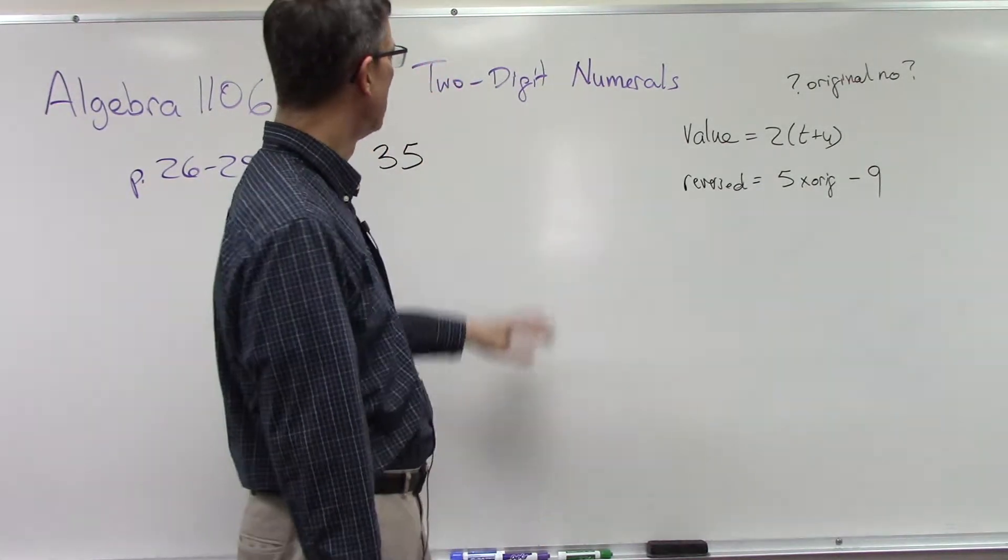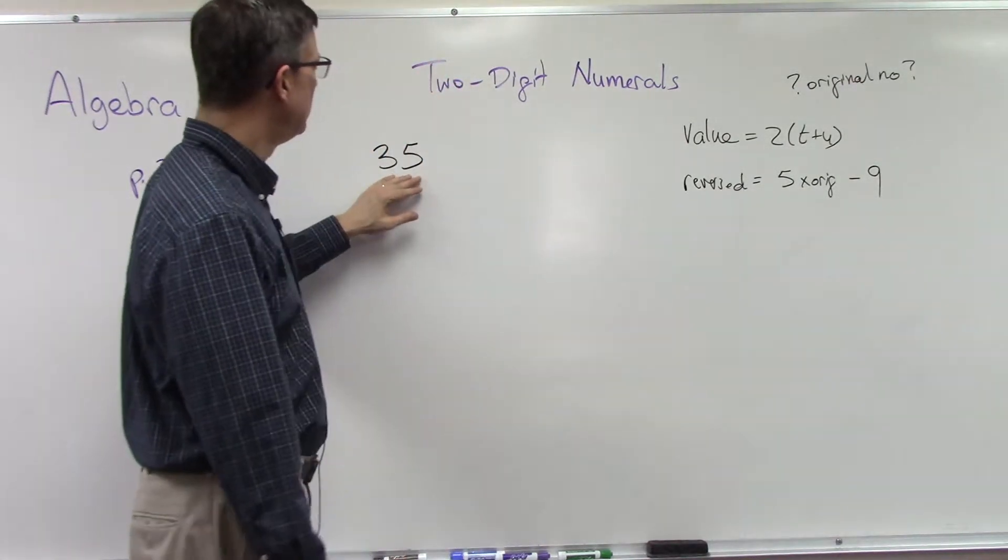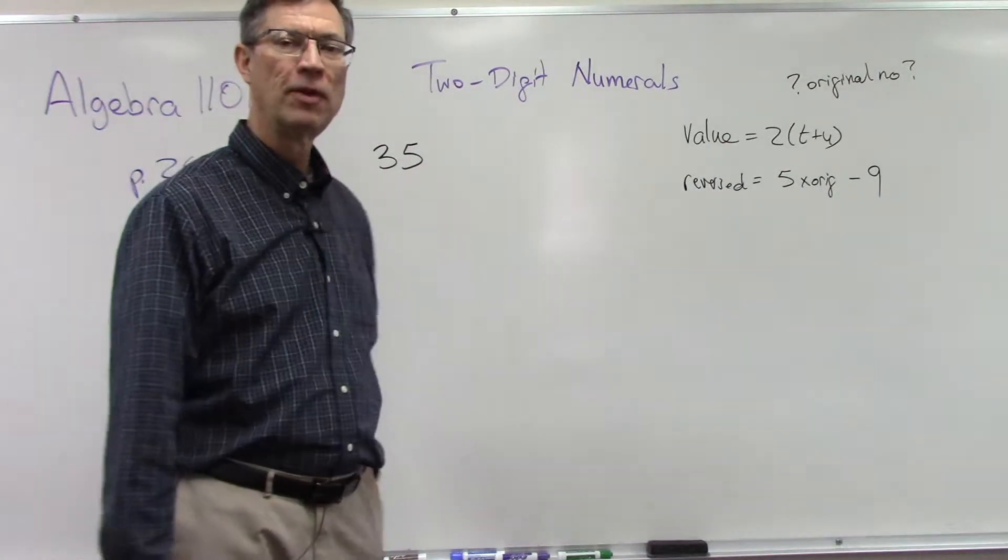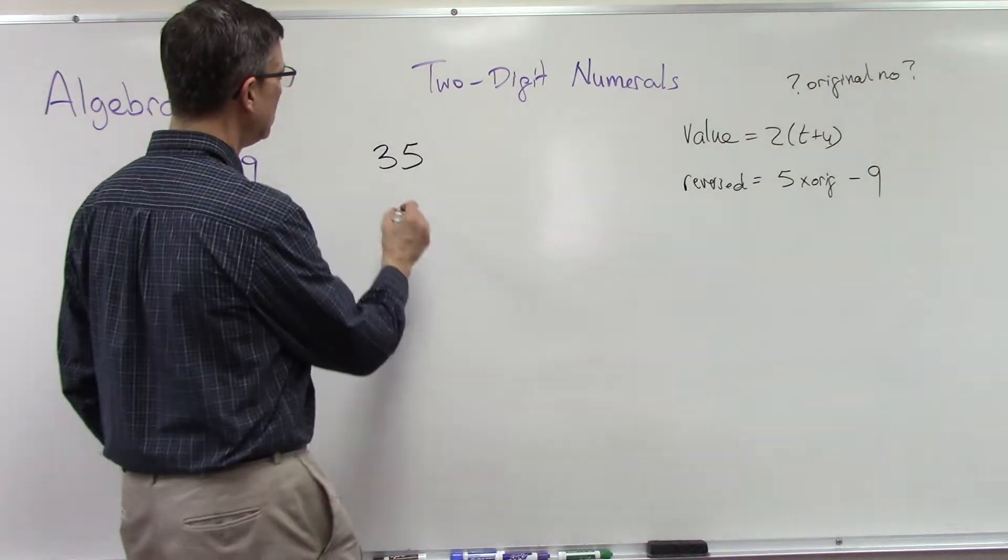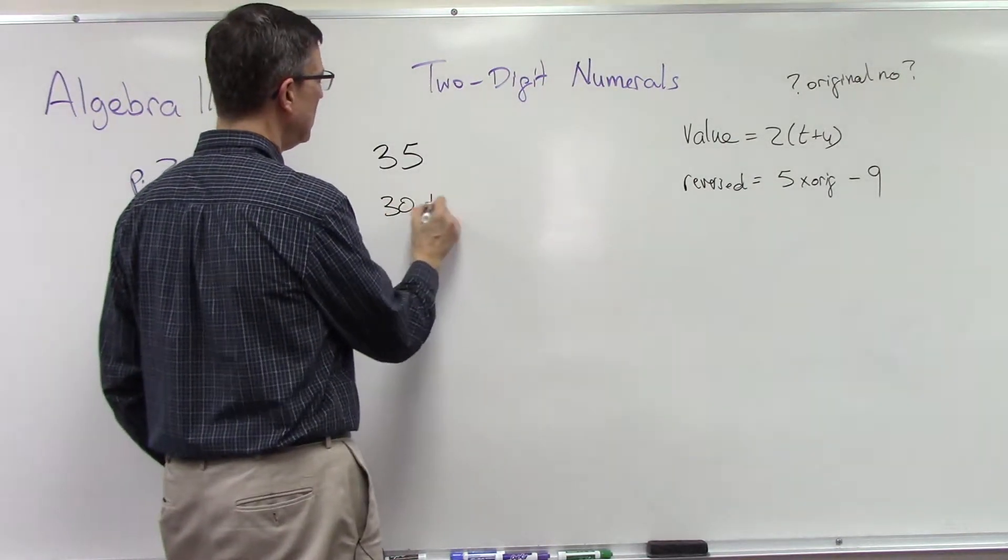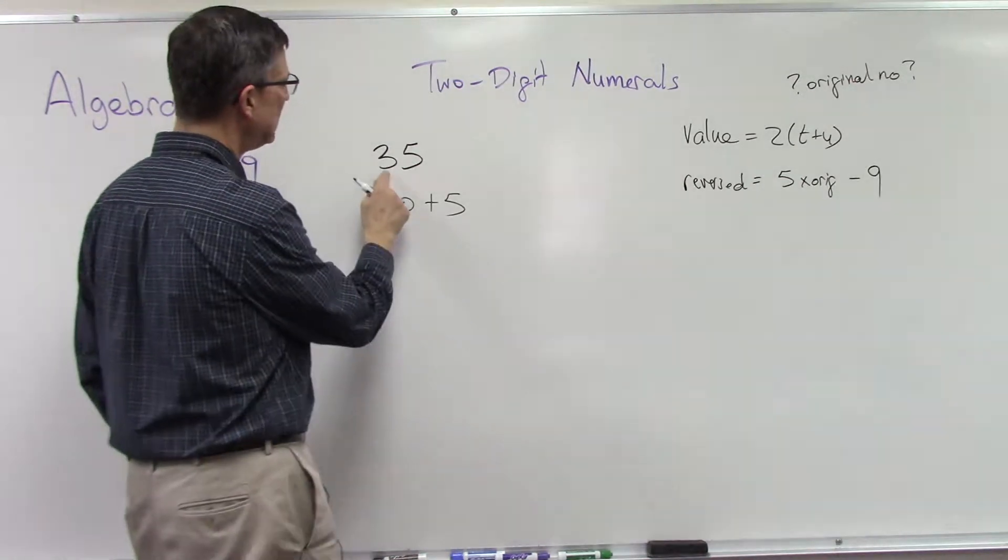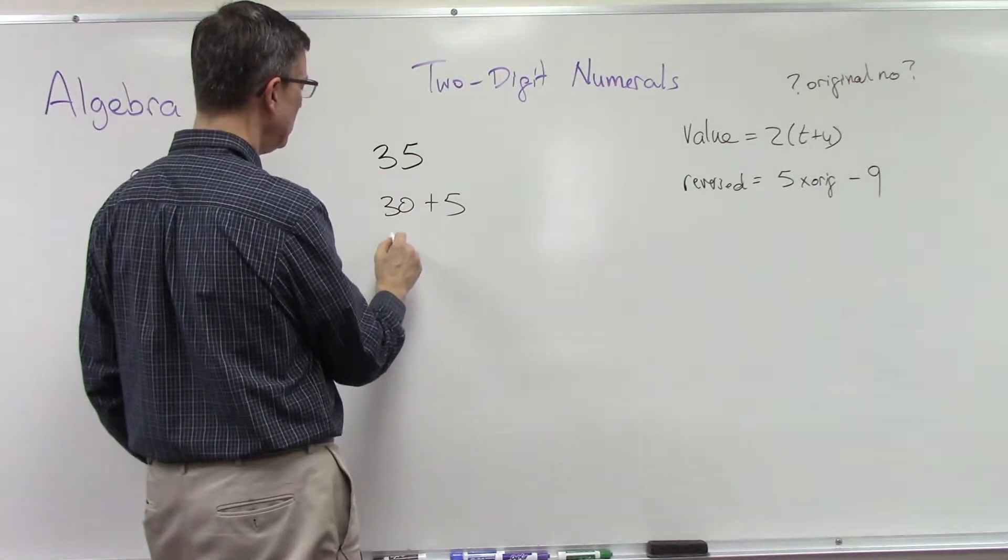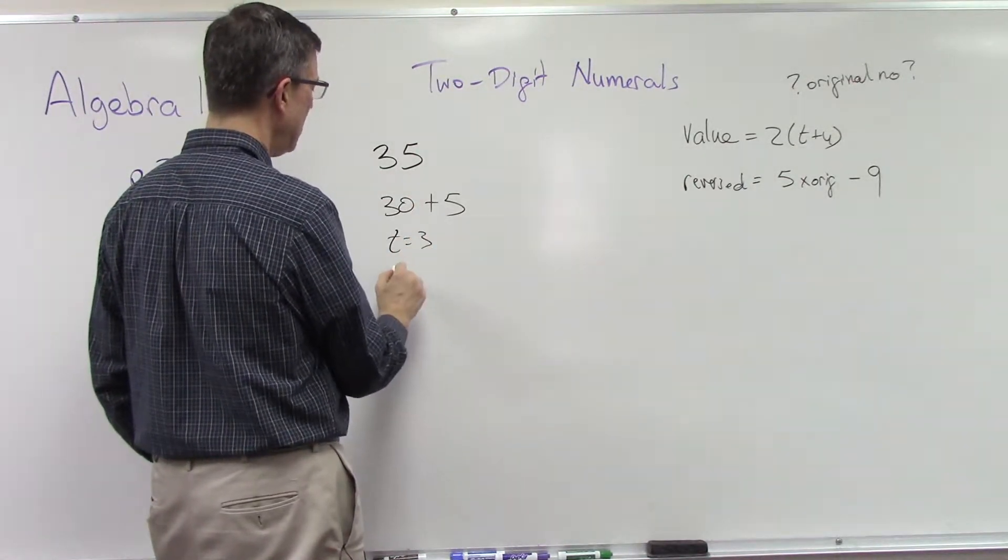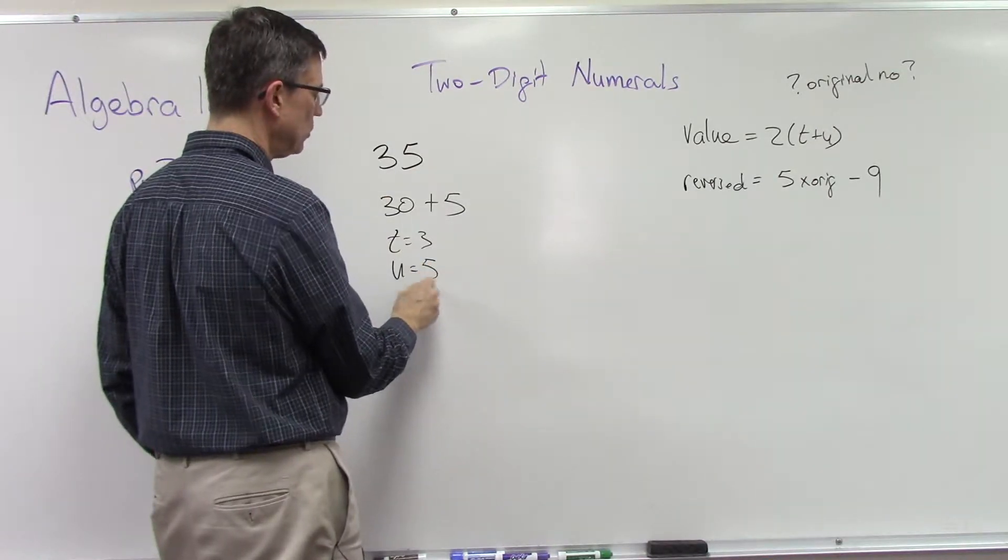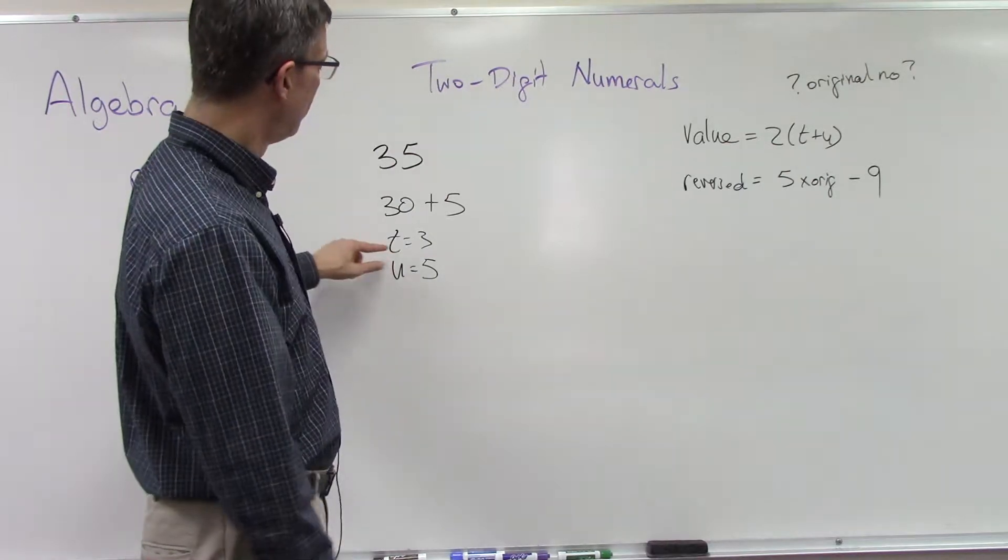Okay, with a two-digit number we have, for instance here, a 3 and a 5. But think about what this really means: 30 plus 5, right? So we could say that the tens digit is 3, and then we call the ones digit the units digit. So in this case, that would be 3 for the tens, 5 for the units digit.